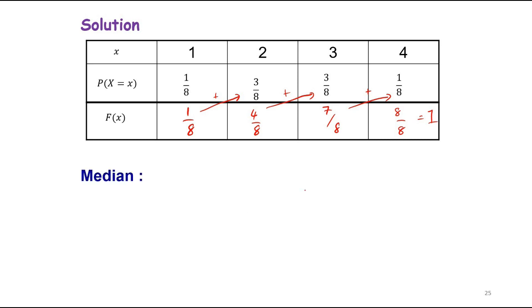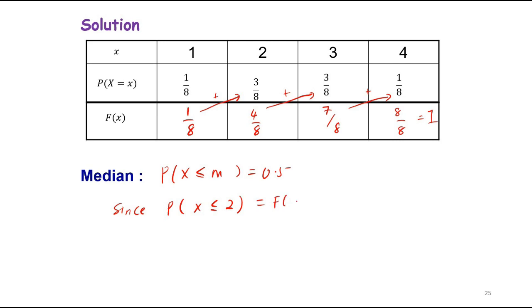For the median, we know that P(X ≤ M) = 0.5. Since P(X ≤ 2) = F(2) = 4/8 = 0.5, the median is 2.